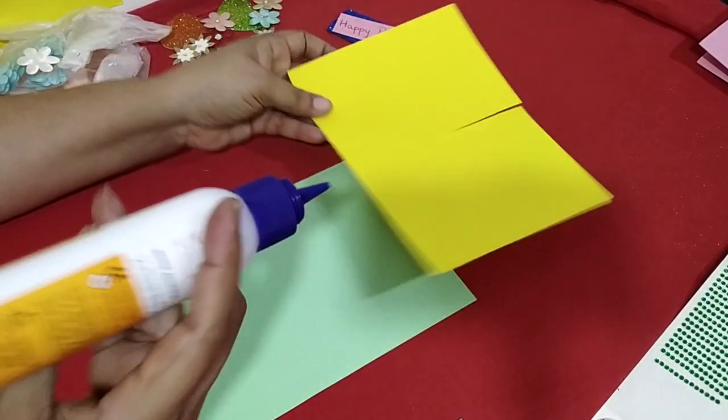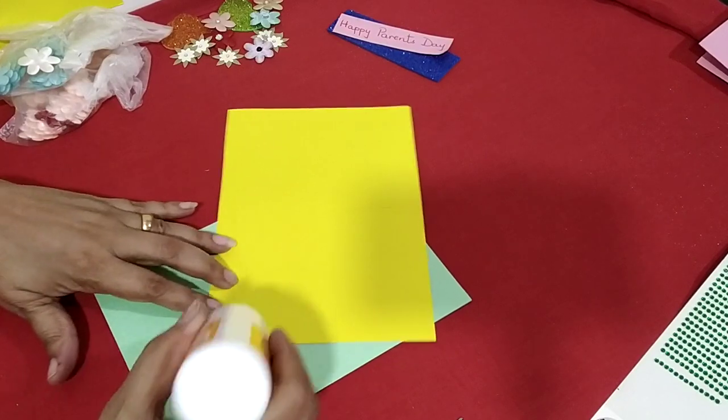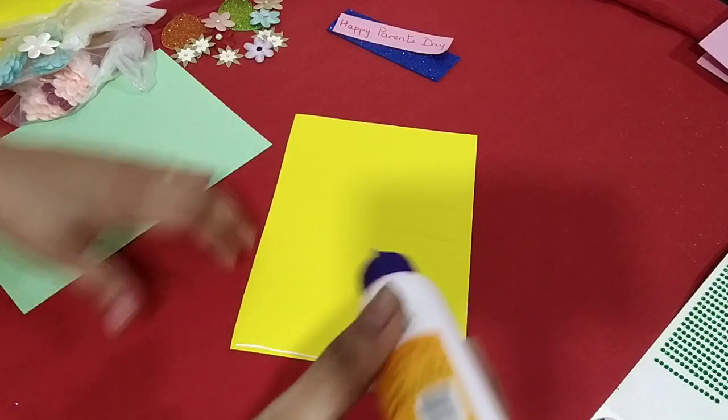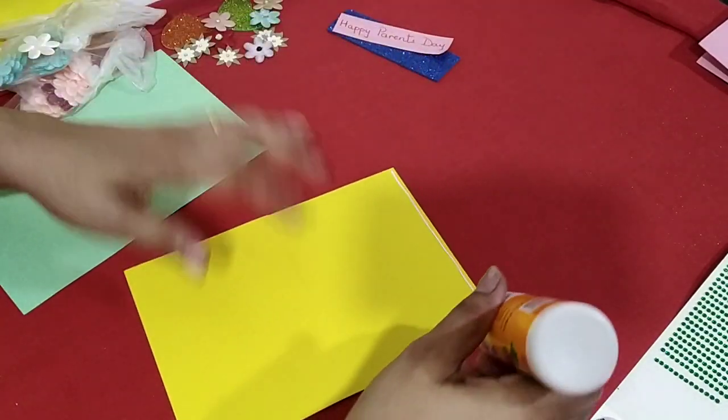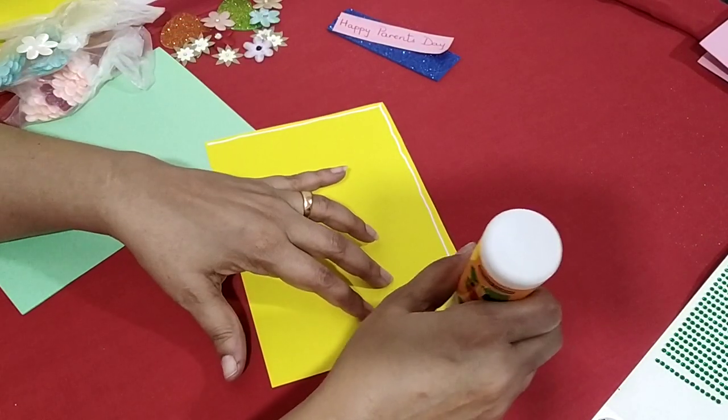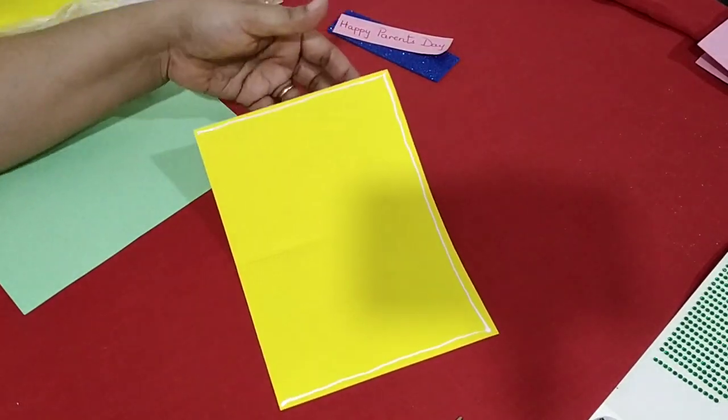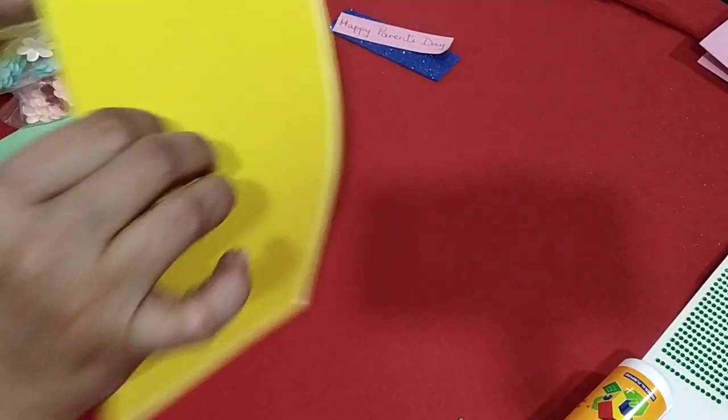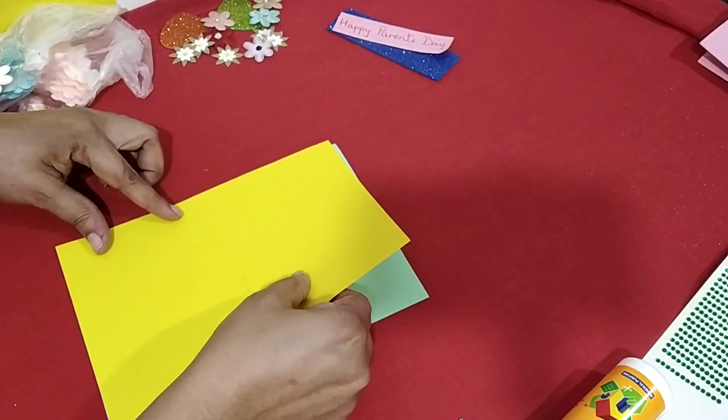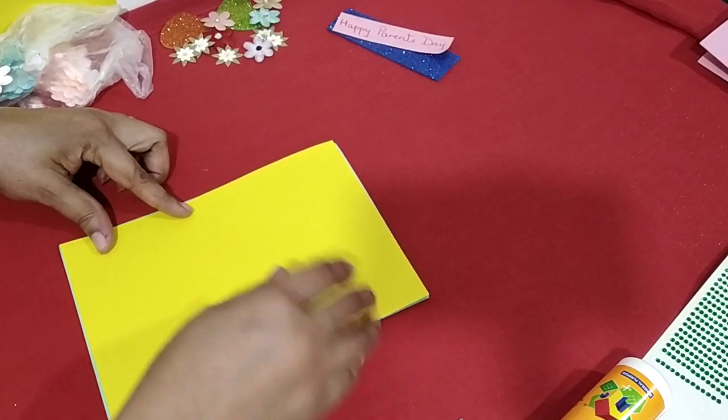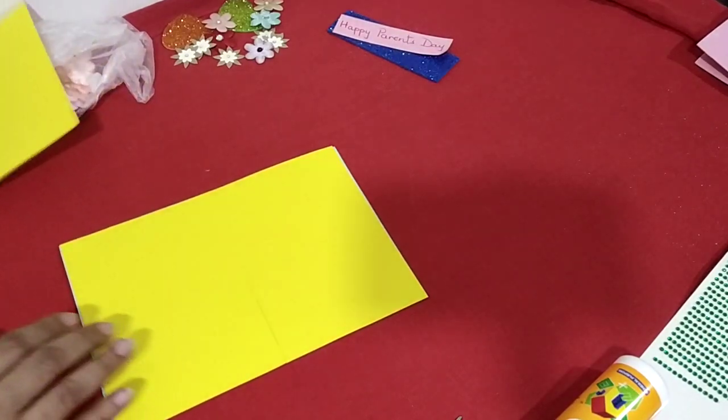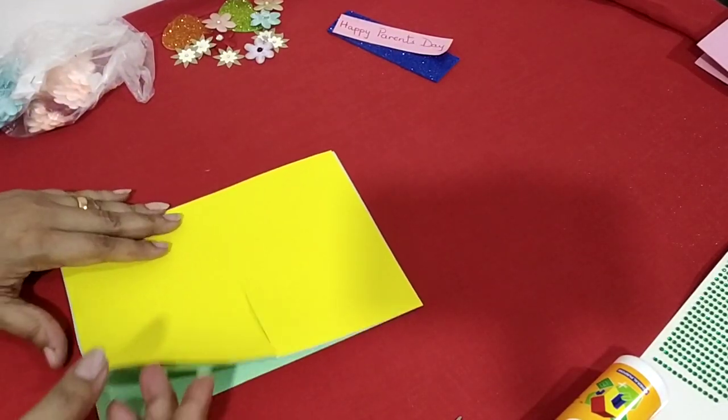Take some glue and put it on the yellow paper like this, only on three sides. And you place it, when you open this card, it should be like this, exactly on top of this. So now you get a yellow sheet on top and a green sheet underneath like this.